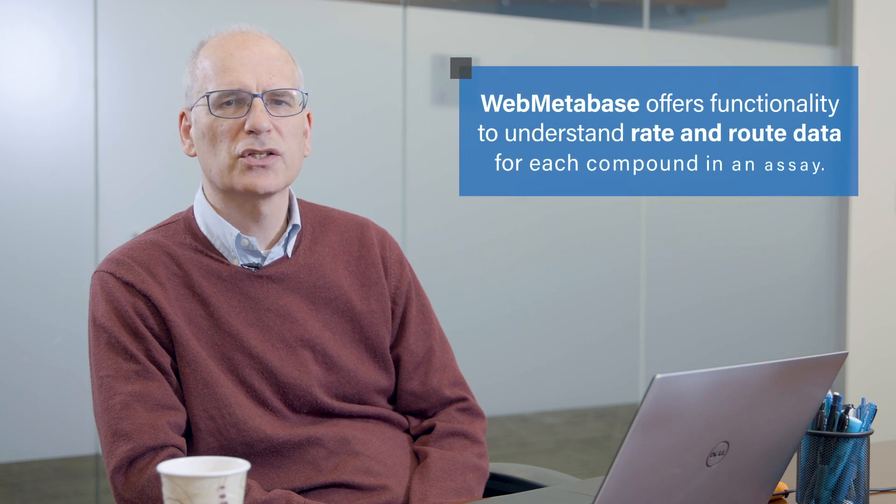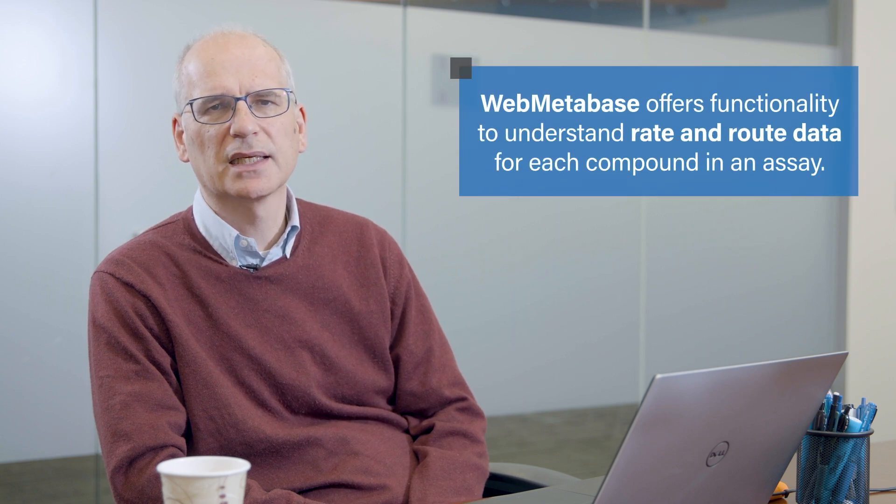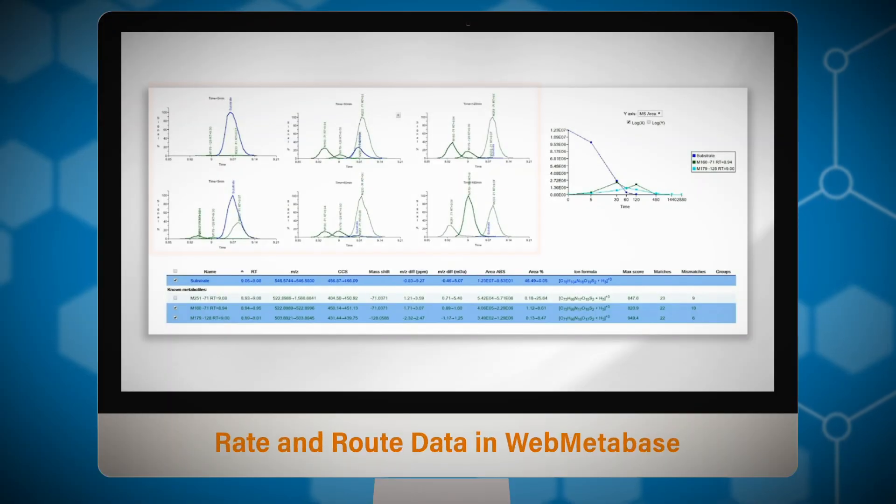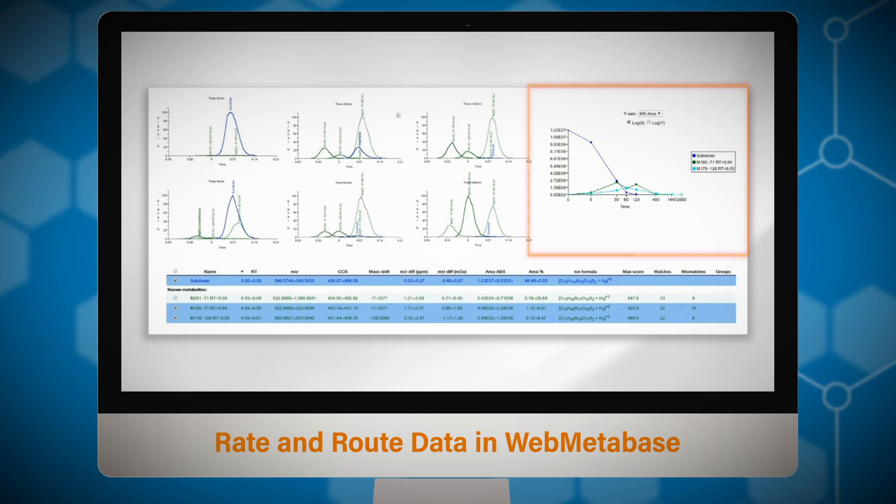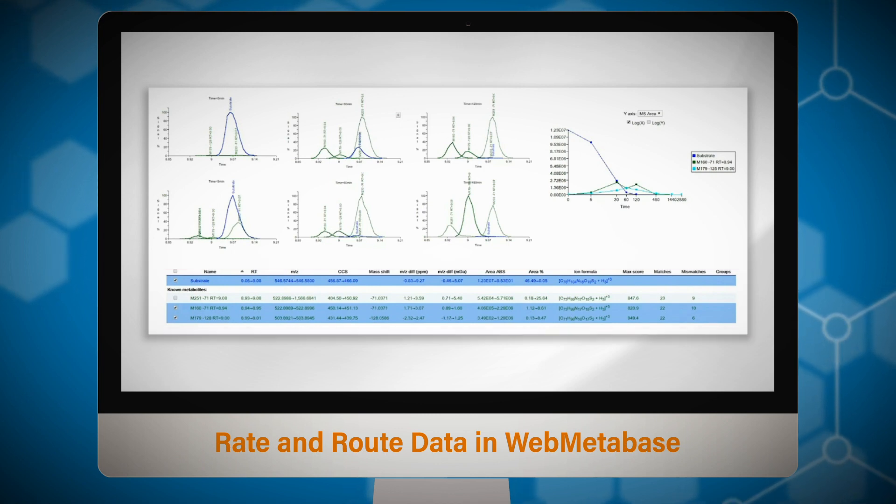Web MetaBase offers functionality to understand both rate and route for each compound in the assay. Here we can review the chromatograms at each time point, look at the response time curves for both parent and any components that we're interested in, and see the rationalization that the software proposes for each metabolite. The platform can handle both small molecules and peptides including cyclic and non-natural forms.